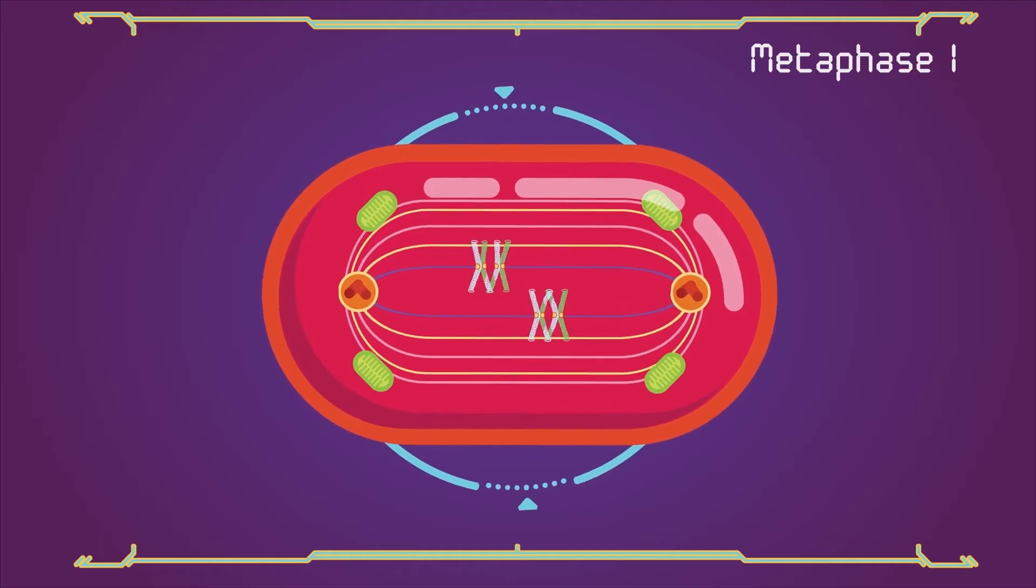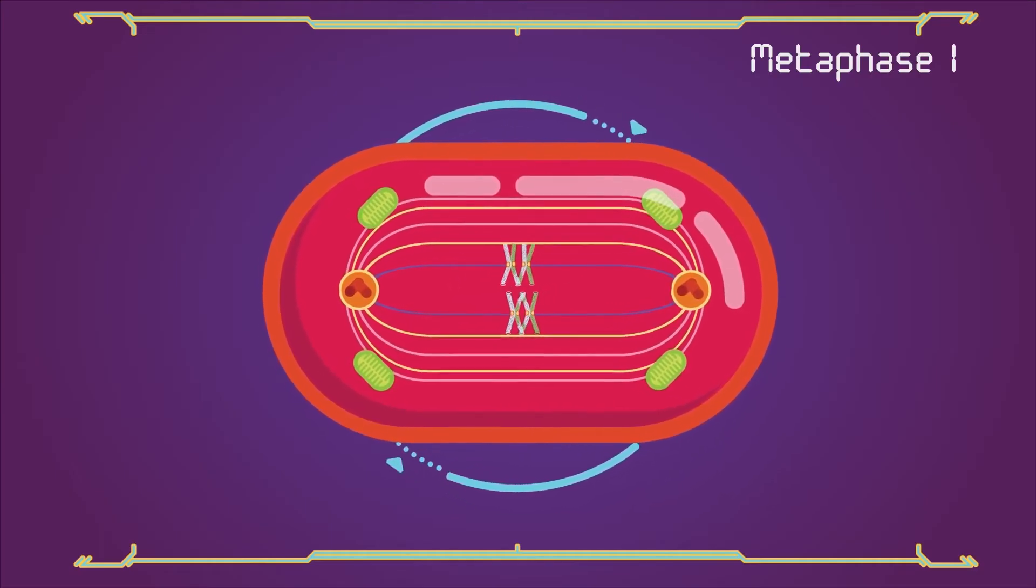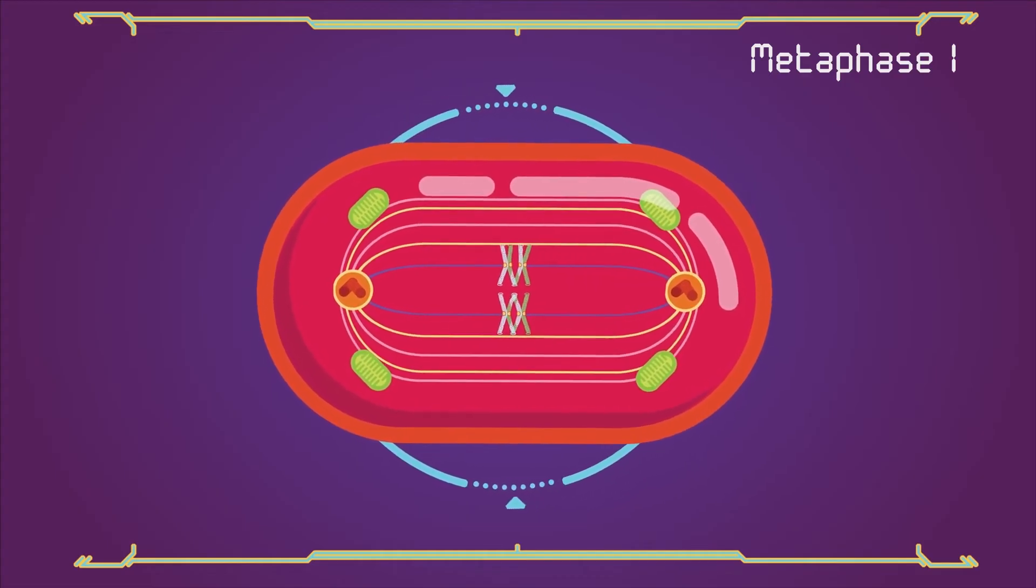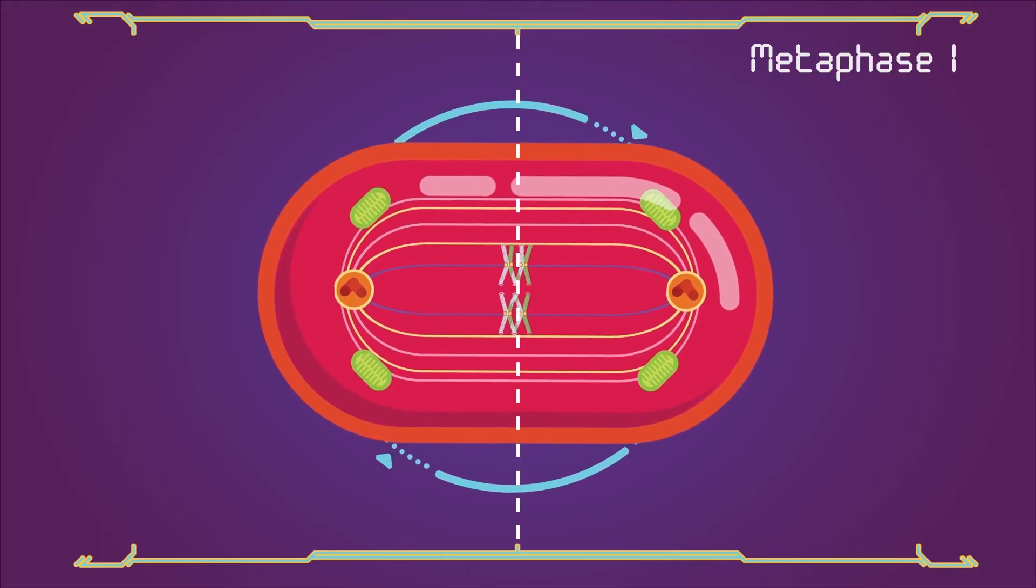Metaphase 1. Homologous pairs move together along the metaphase plate. The paired homologous chromosomes align along an equatorial plane that bisects the spindle.